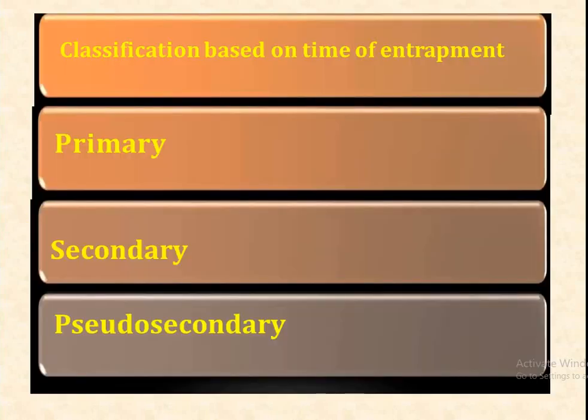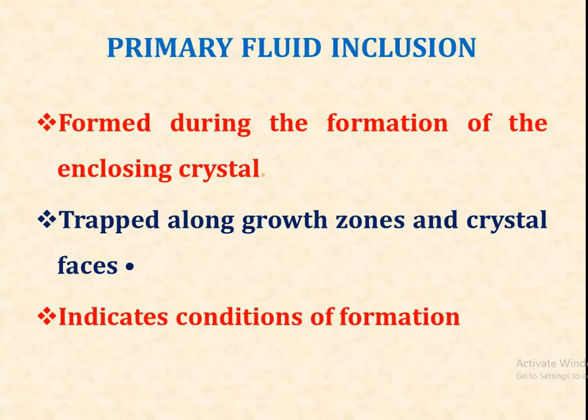Now, classification based on entrapment. Fluid inclusions are divided into three categories: primary fluid inclusions, secondary fluid inclusions, and pseudo-secondary fluid inclusions. Primary fluid inclusions are formed during the formation of the host crystal and are trapped along growth zones and crystal faces. They indicate the conditions of formation.